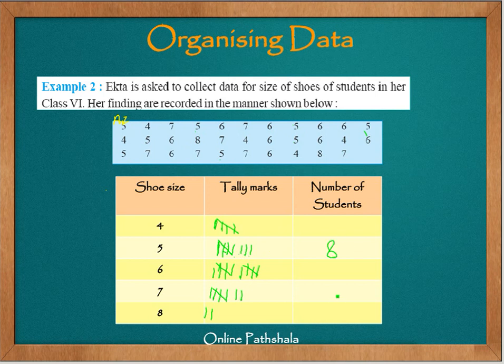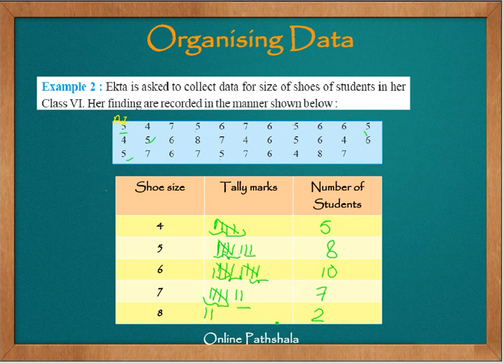The number of students requiring size 5 is 8, size 4 is 5, size 6 is 10, and size 7 is 7. It would have been difficult to count individual marks directly, but with tally groupings we can quickly see group of 5 plus 3 equals 8, or group of 5 plus 5 equals 10. Tally is a representation or way of organizing data that makes it faster and easier to draw conclusions from the information.